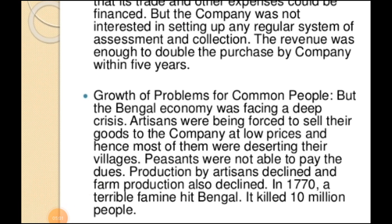In 1770, a terrible famine hit Bengal and it killed 10 million people. A famine means that when there are many years without water and agriculture will not grow — that is called a famine. In that famine, 10 million people were killed.